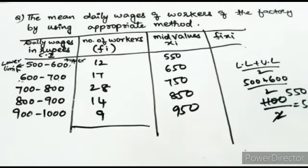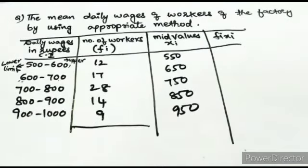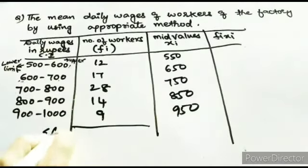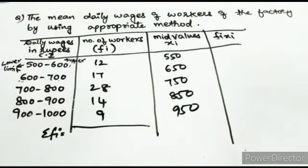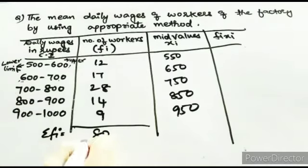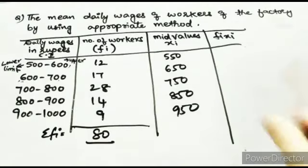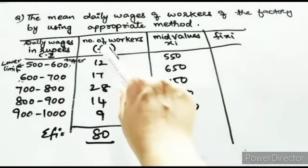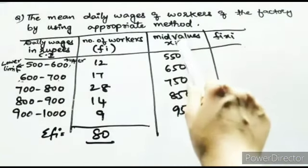Now find Σfi: 12 + 17 + 28 + 14 + 9 = 80. So Σfi = 80. Now calculate fi·xi, where fi is the frequency and xi is the mid value.